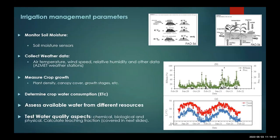For irrigation management, what parameters do we need to measure? We talk about soil moisture — there are lots of new sensors on the market, some good some bad, but I've seen on lots of farms that people are using sensors to detect soil moisture and help with irrigation scheduling. We also need weather data — we have azimuth weather stations all over Arizona that provide temperature, relative humidity, wind speed, and other things needed for irrigation models to calculate water use.